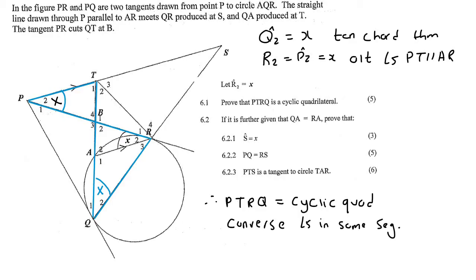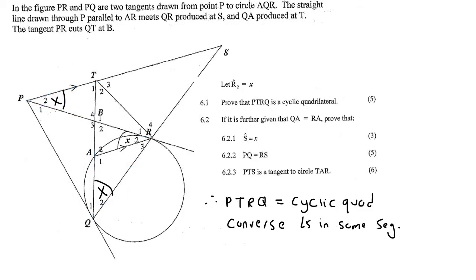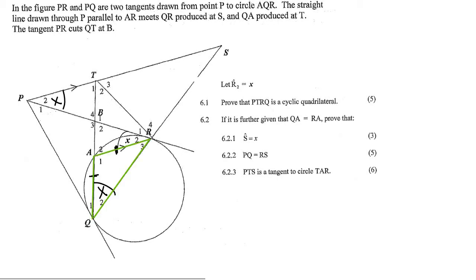Remember it would either be option one, two, or three, but when you've got lines going across then very often it becomes a bow-tie kind of question. For 6.2, it is further given that QA is equal to RA. Because those two sides are the same, it's an isosceles triangle, so we can also say that R3 will be equal to x — the reason being angles opposite equal sides.